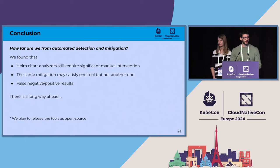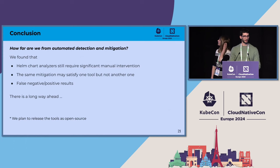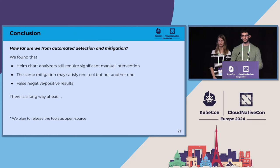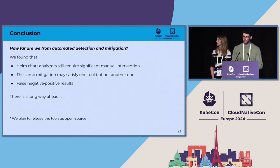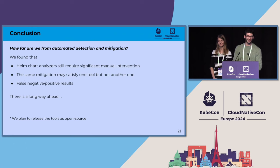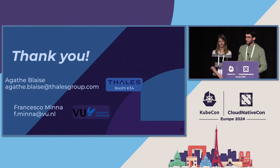Answering the question from the title: how far are we from automatic detection and mitigation with configuration files? We are still pretty far, unfortunately, because such tools still require quite a significant amount of manual work — both to understand the output and mostly to actually remove the misconfigurations. We also found inconsistencies where a configuration satisfies one tool but not another, and some false positive and negative results. So there is a long way ahead, but I'm optimistic. Standardization is really what we need as a first step, and as a community we can start from there and have more secure configurations. Thank you for listening.